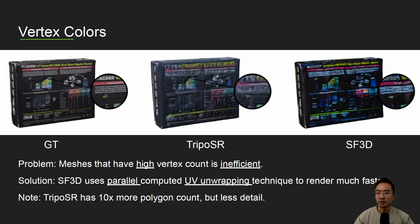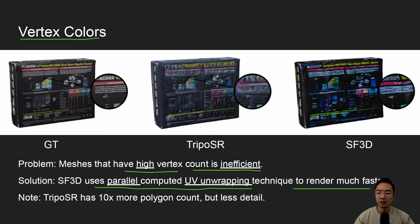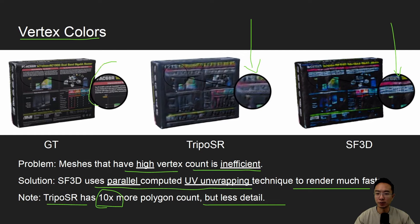Another feature is vertex colors. The problem is that meshes have high vertex count, making rendering more inefficient. SF3D's solution is a parallel computed UV unwrapping technique to render much faster. Notably, TripOSR has 10 times more polygon count but less detail. If you compare the zoomed-in areas, SF3D has much more detail while using a tenth of the number of vertices.